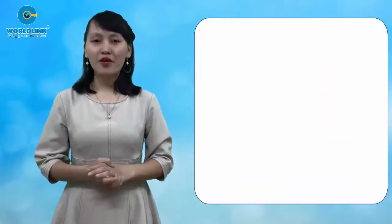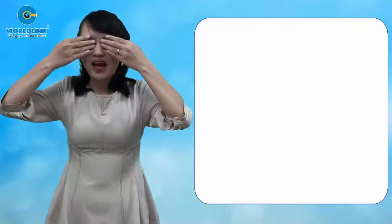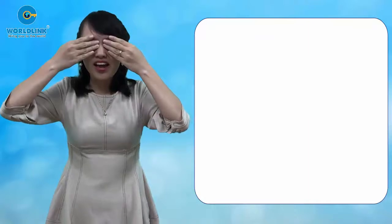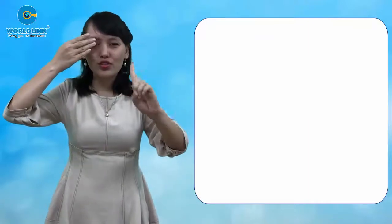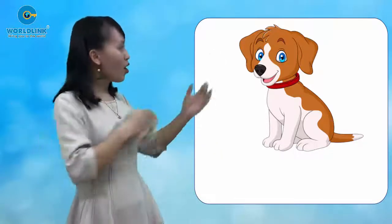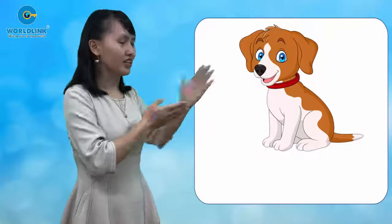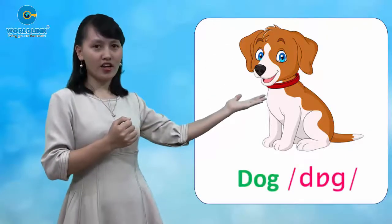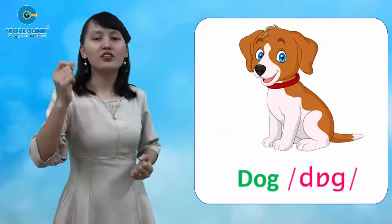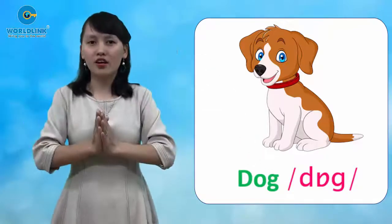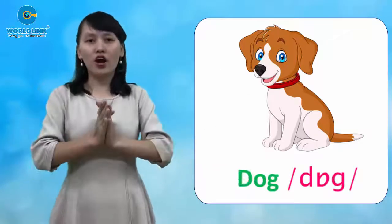So now, everybody close your eyes please. Are you ready? One, two, three. Open your eyes, everybody. Do you know what animal is it? It's a dog. You say D, D, dog. It's a dog. One more time — it's a dog.